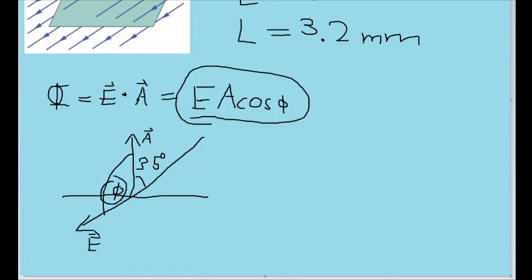So, to find this angle, we'll just need to take 180 degrees and subtract 35 degrees. And this gets us 145 degrees. And this is the angle that we'll actually want to use in our formula.